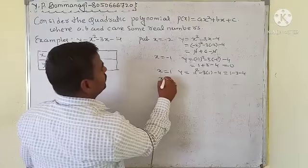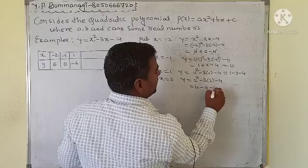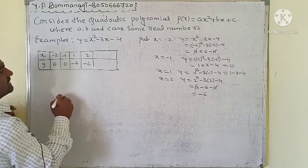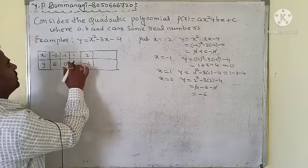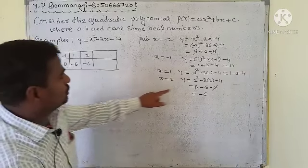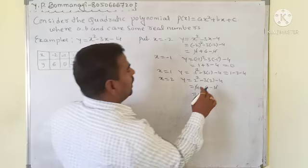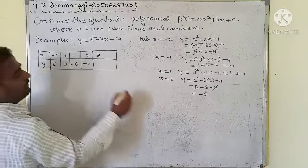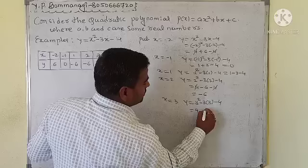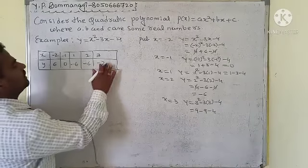When x = 2: y = 2² - 3(2) - 4 = 4 - 6 - 4 = -6. When x = 3: y = 3² - 3(3) - 4 = 9 - 9 - 4 = -4. So we have our table of values.